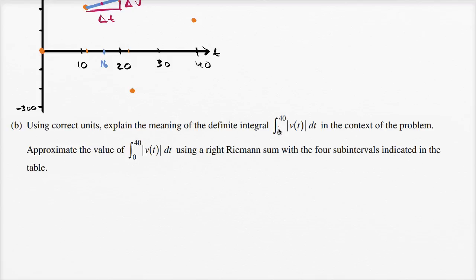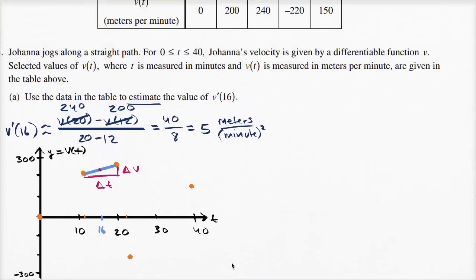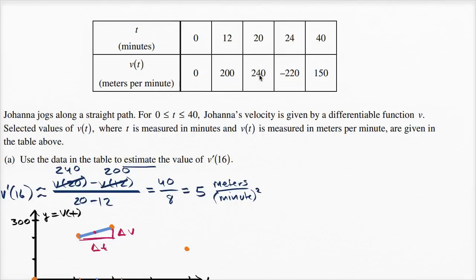Let's first tackle the first part — what's the meaning of this definite integral? Velocity is a vector; it has direction. You can see that sometimes the velocity is positive and sometimes it is negative. A reasonable interpretation is that positive velocity is when she's walking in one direction, and negative velocity is when she's walking the other way — some speed in the other direction.